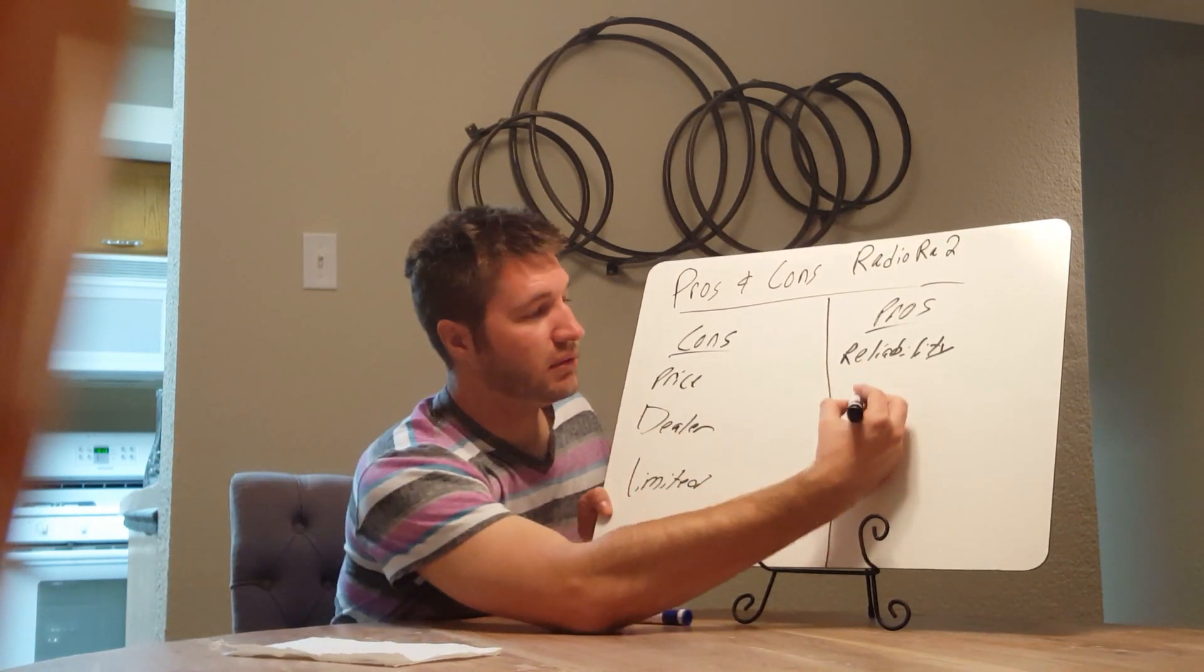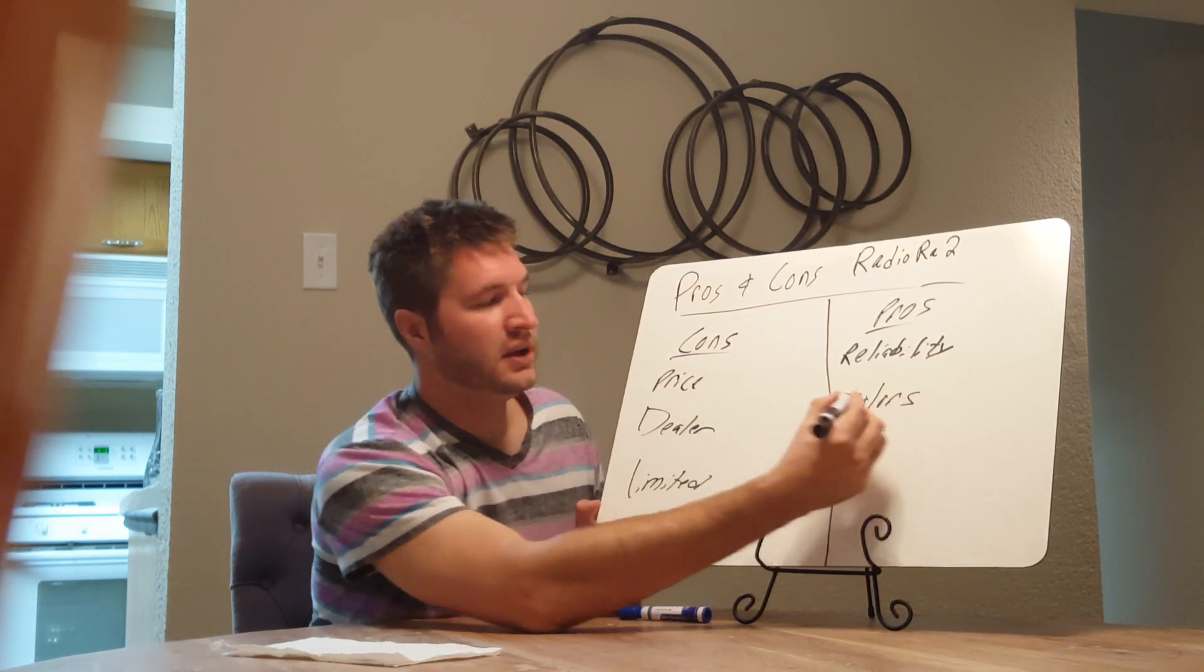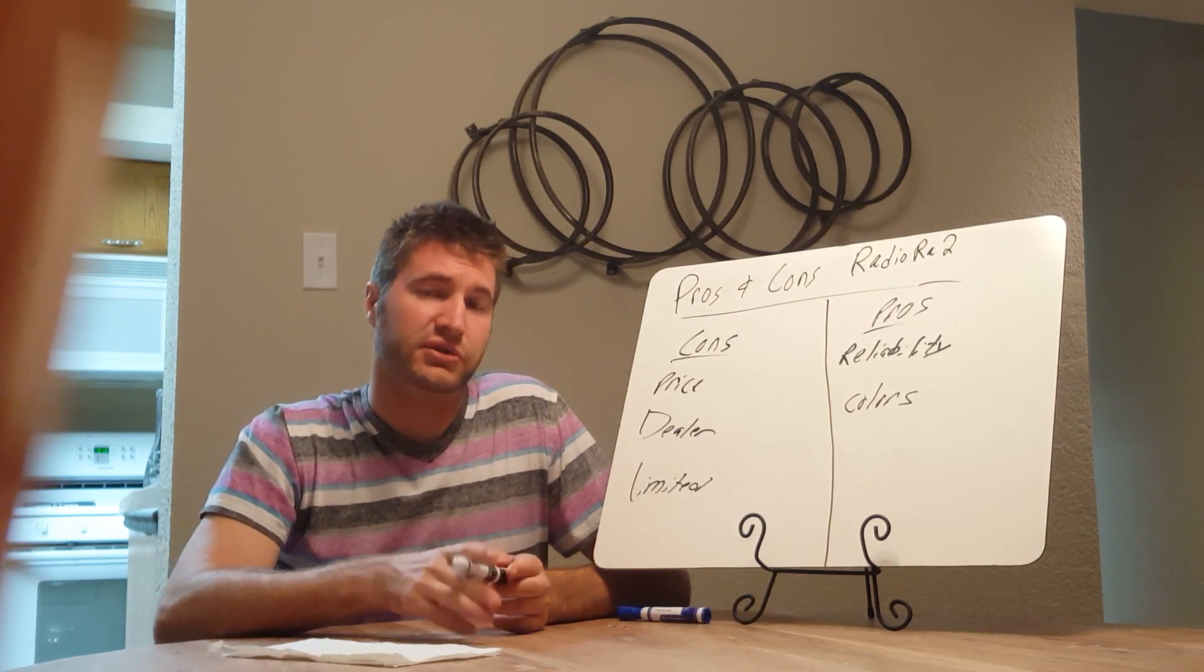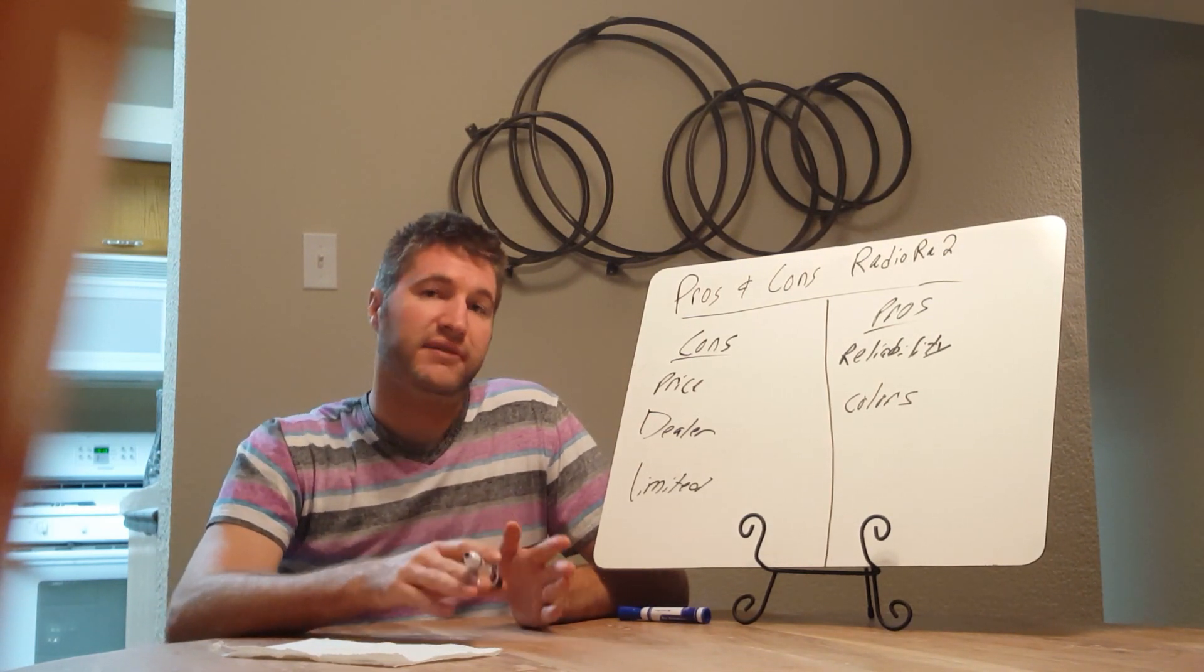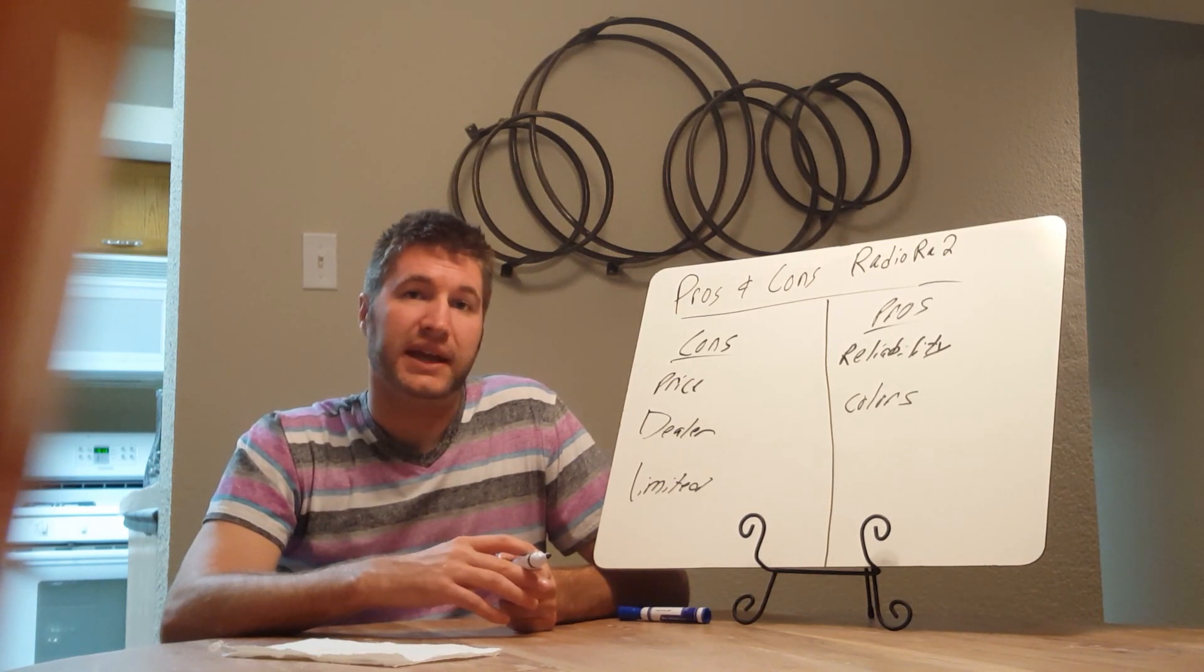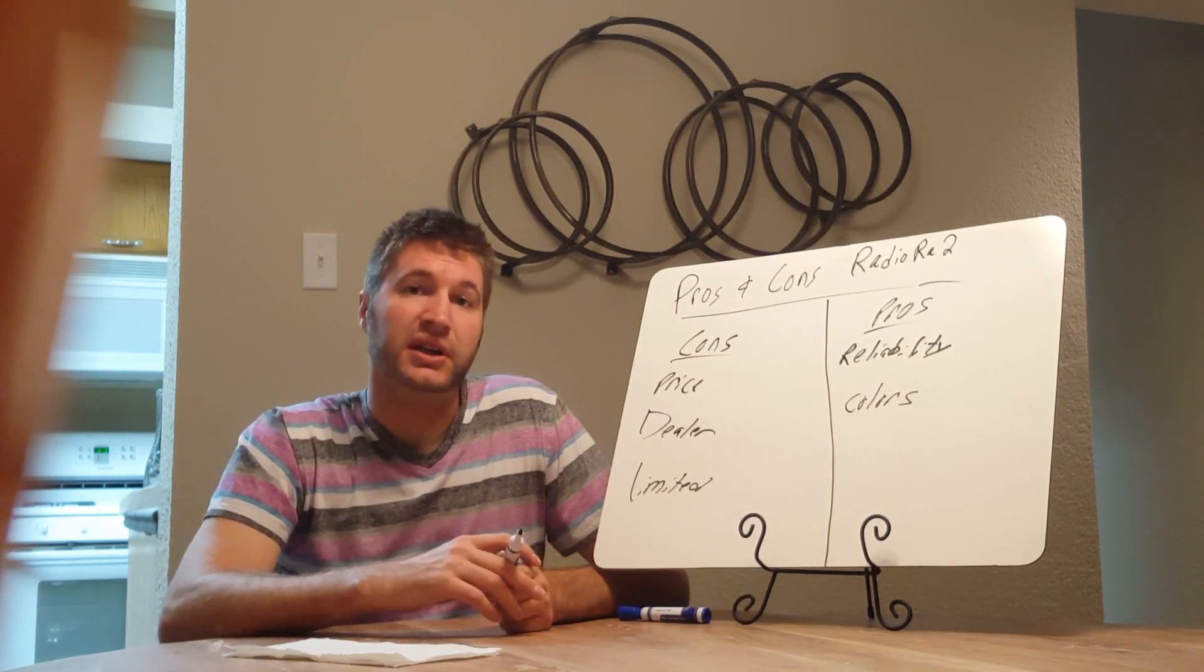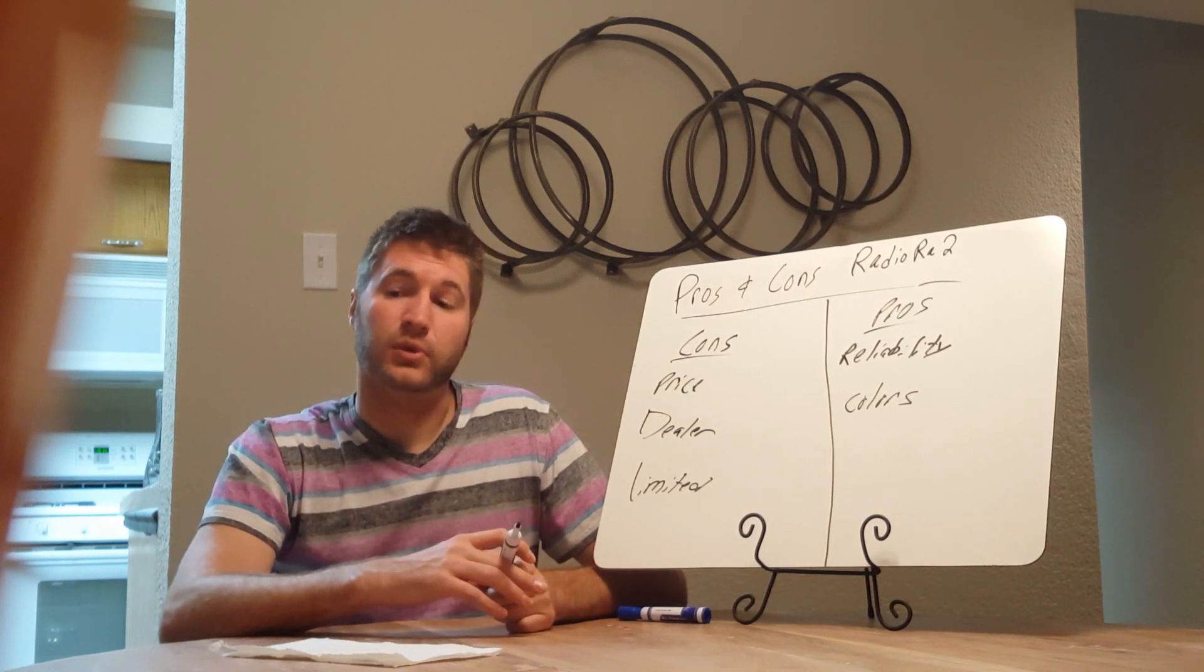The next pro, which Lutron is very proud of, is colors. I believe it's 37 different colors you can choose from with the dimmers and the wall decors. Interior designers love that. With other technologies, you've got your three main colors: white, light almond, ivory and almond. But if you want to use a whole bunch of different colors, Lutron's definitely a good solution for that.